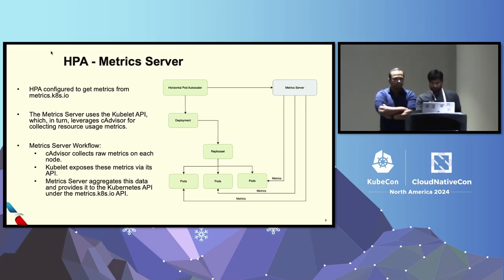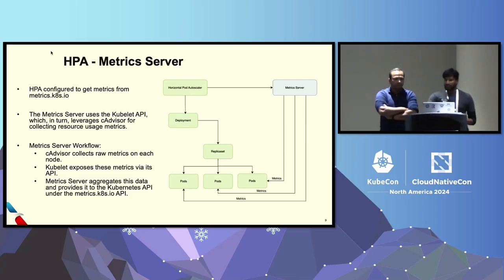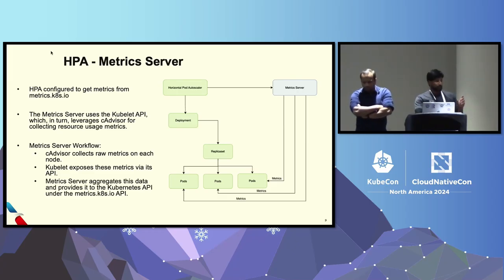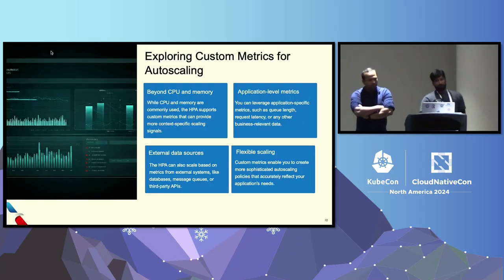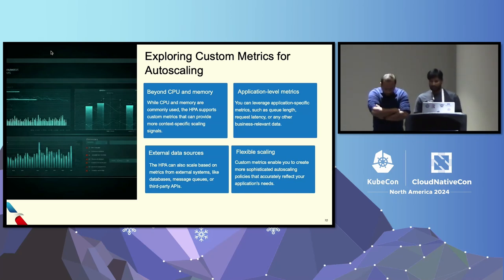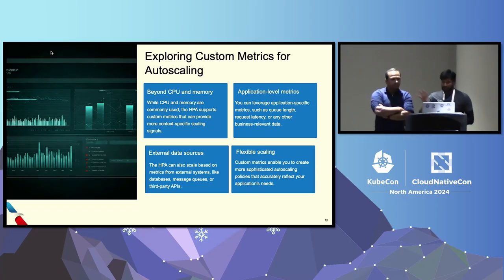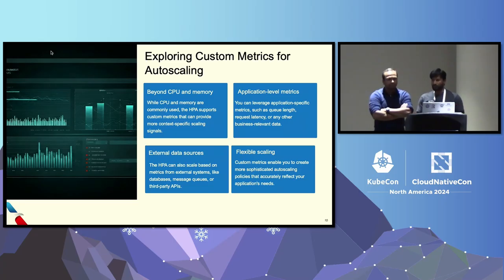But scaling needs are not limited to just CPU and memory. There can be bottlenecks on the networking side — not every time you require CPU and memory to scale. That's where custom metrics come in. Custom metrics are user-defined performance indicators that extend the default CPU and memory resources supported by HPA. Beyond CPU and memory, you can use application-level metrics such as queue length, request latency, or any business-level data you want to bring in. There are external sources too.